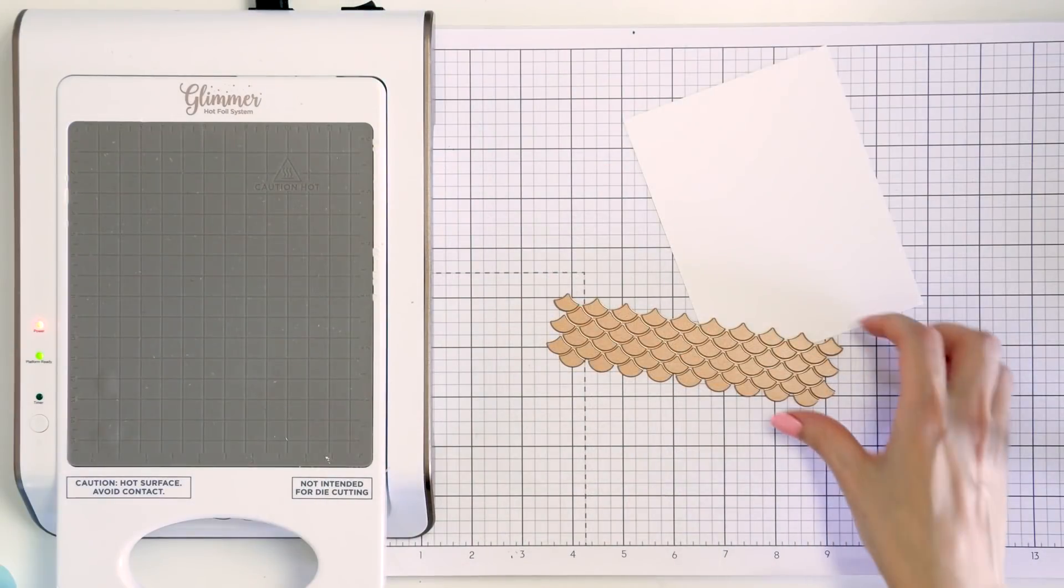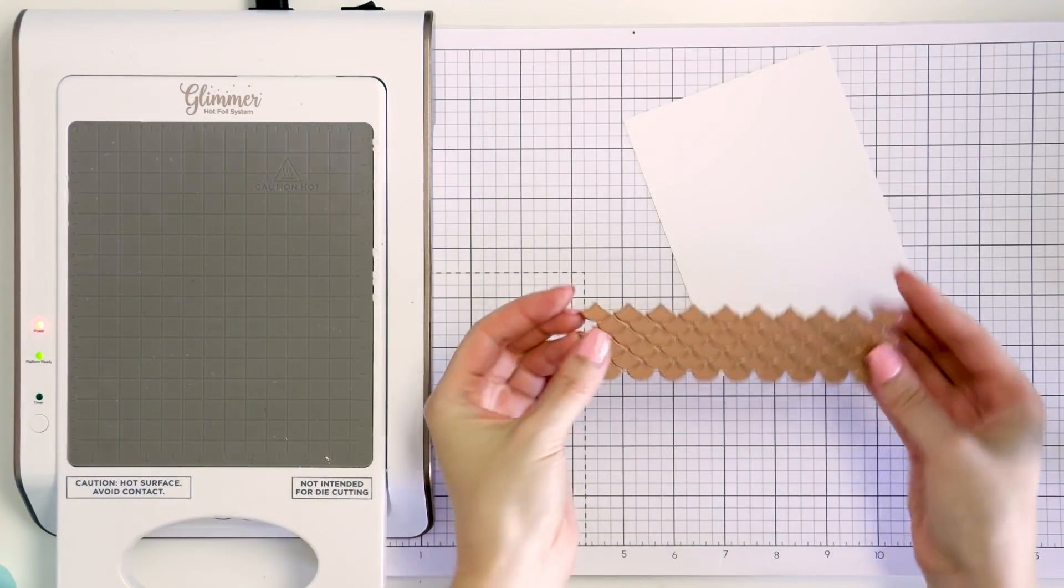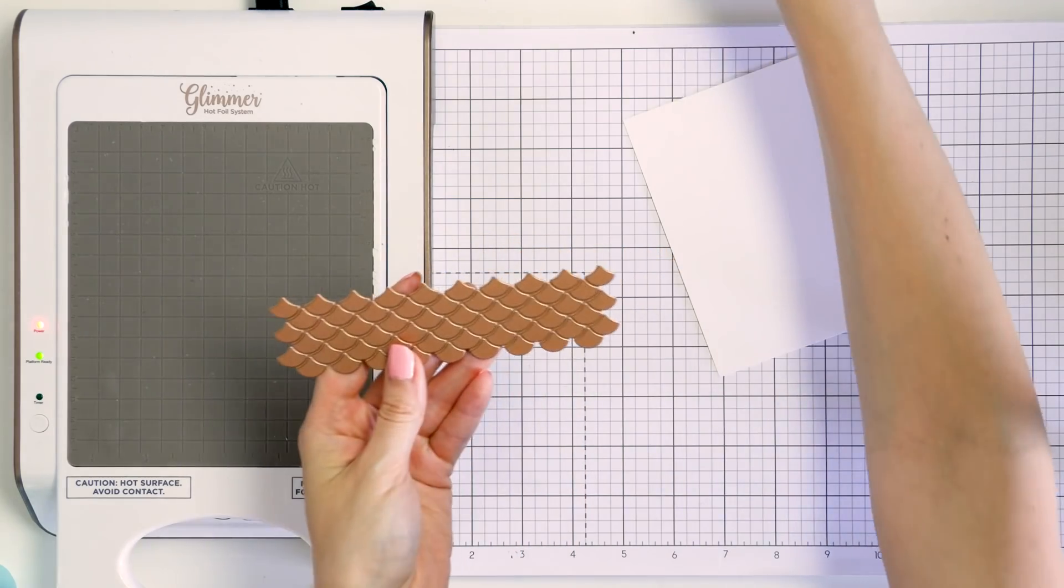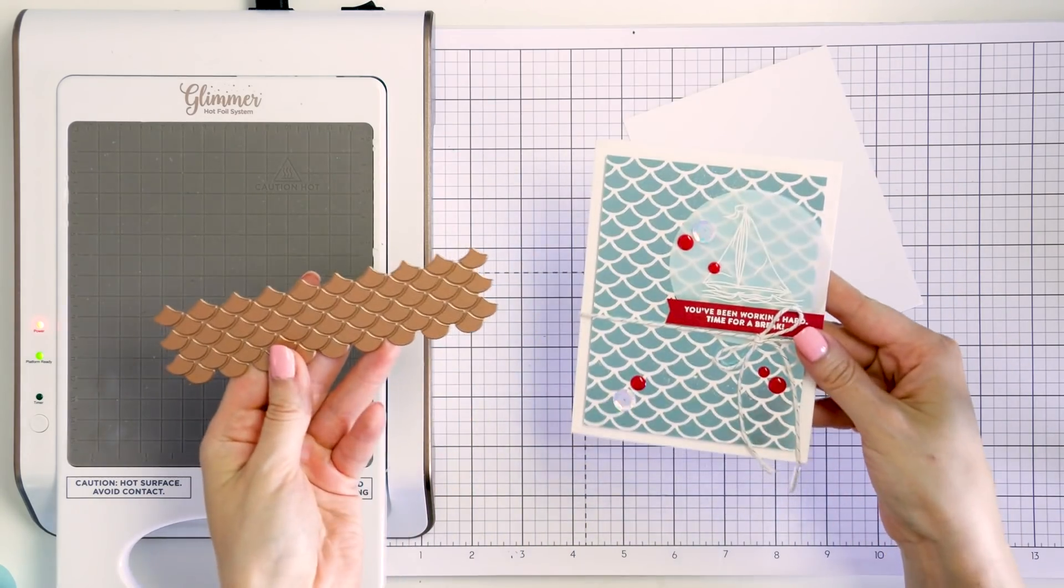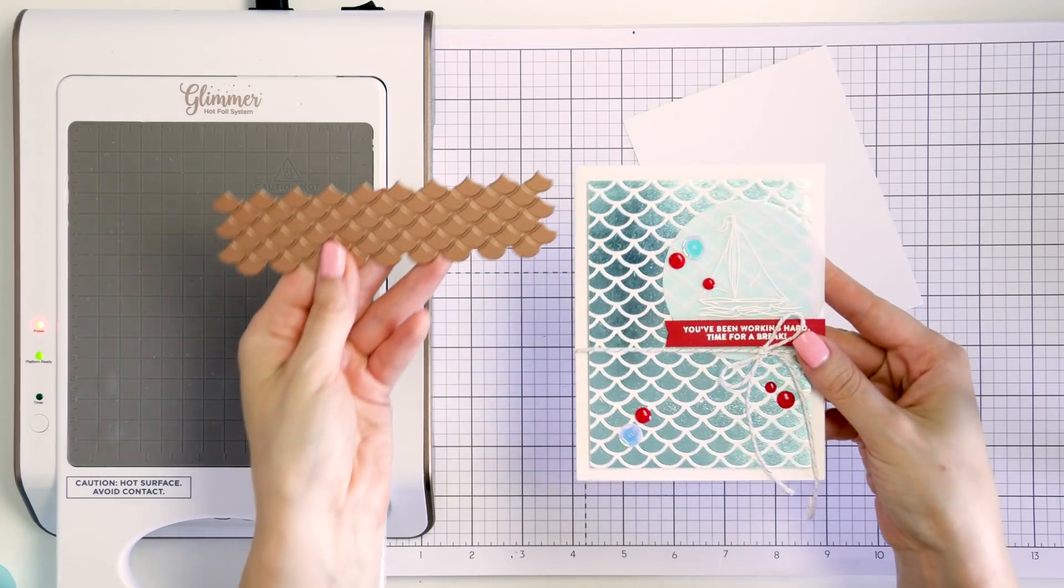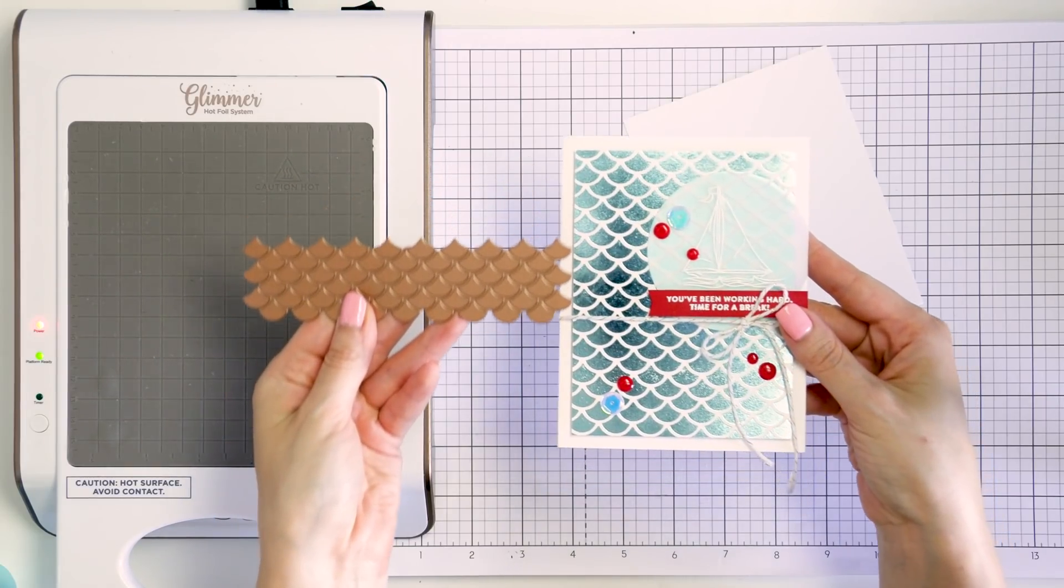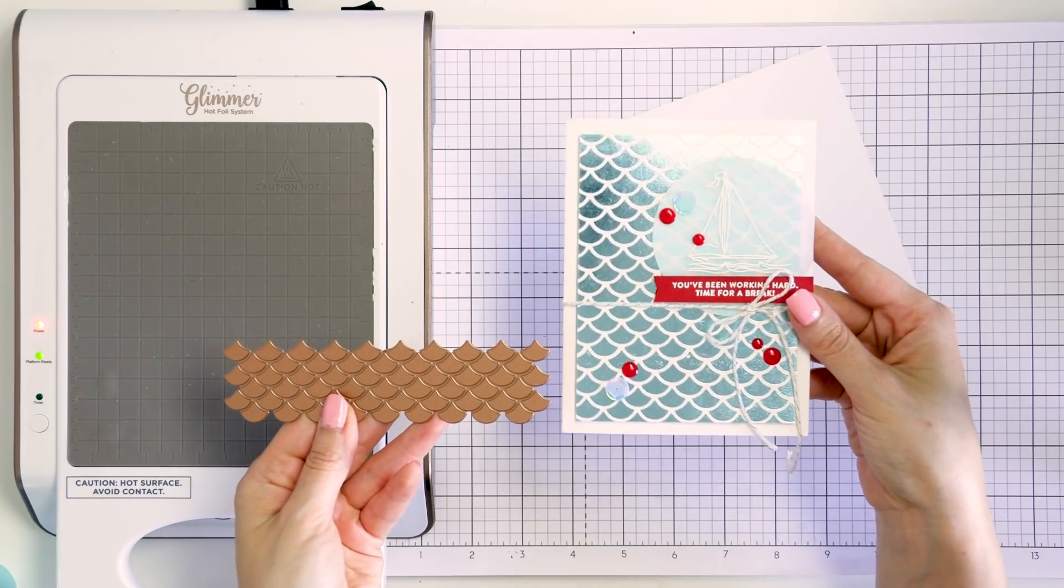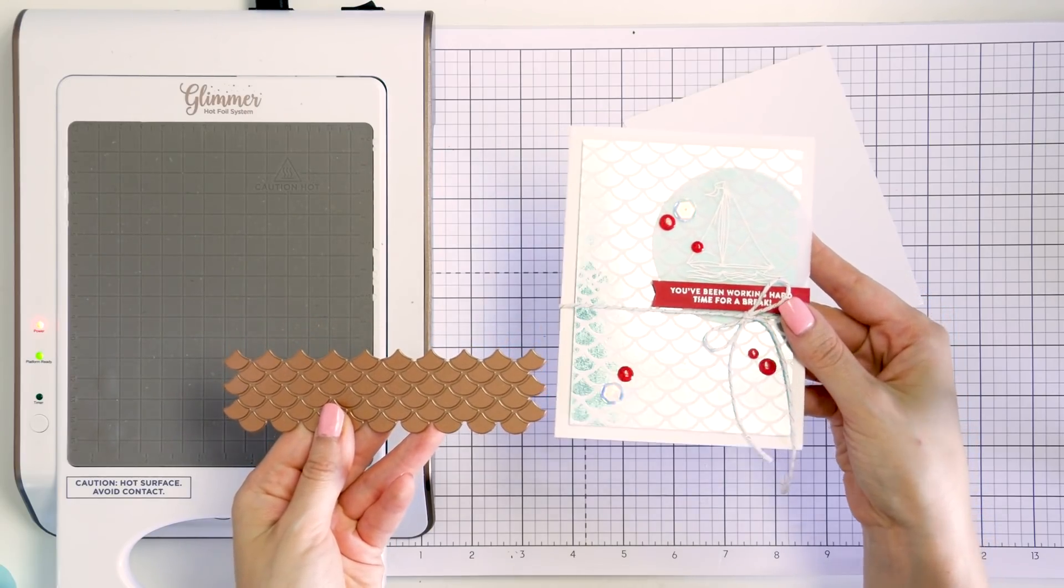I love this Mermaid's Forever glimmer plate by Jane Davenport and I know it will make a fabulous background for some nautical cards when paired with Simon's Your Light stamp set. Here's a card I already made using these supplies and you can see how gorgeous of a sea background this plate makes.